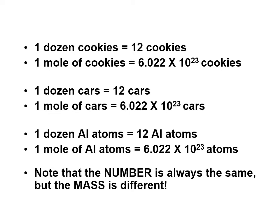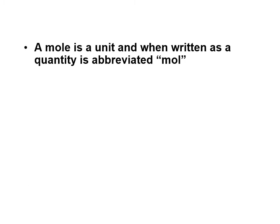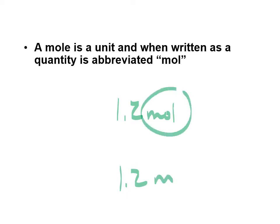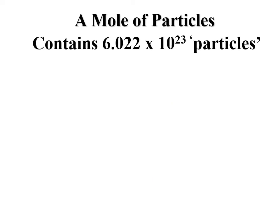Remember, the number is the same — a mole is just a particular number, just like a dozen is just a particular number. It depends on what you're measuring, but realize that the mass would be different. A mole of aluminum atoms and a mole of cars would be very different in mass. Mole is a unit. We like to save time in chemistry, so instead of writing 'mole' we drop the e and write 'mol' — just like meters becomes 'm.' So 3 moles would be written as 3 mol.